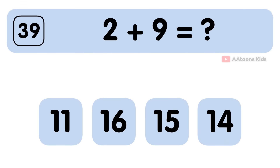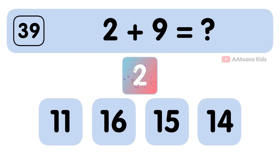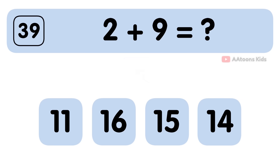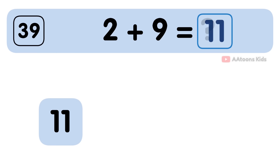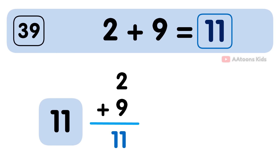2 plus 9 is equal to 11. The answer to 2 plus 9 is 11.